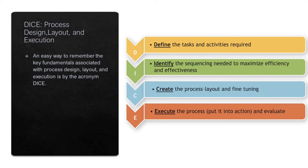How do we design a process? The first step is to define the tasks and activities required. The second is to identify the sequencing needed to maximize efficiency and effectiveness. Then you create the process layout and fine-tune it. Lastly, you execute the process and regularly evaluate it, taking the necessary steps to improve it.